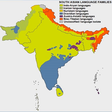The Nahali language is a language isolate spoken in Madhya Pradesh and Maharashtra. Affiliations have been suggested to the Munda languages but they have yet to be demonstrated.